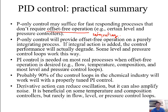P-only control is also useful when you don't really care about offset — like if there's no specific set point. An example would be a flow control loop with a valve positioner, where the valve positioner often has P-only control to keep the valve moving.